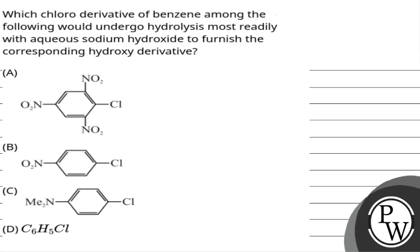The question asks: which chloro derivative of benzene among the following would undergo hydrolysis more readily with aqueous sodium hydroxide to furnish the corresponding hydroxy derivative? Four compounds are given and we need to identify which one will give this reaction most easily.